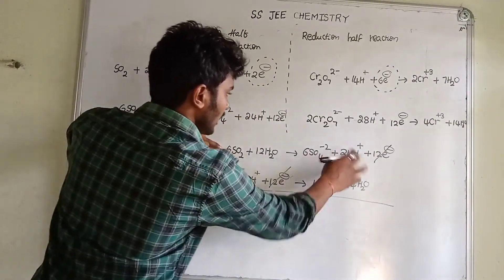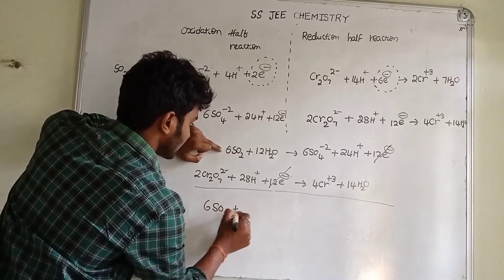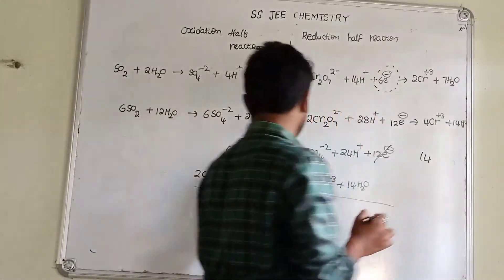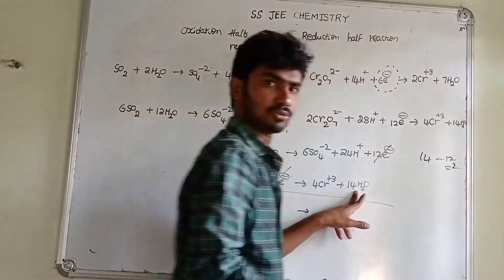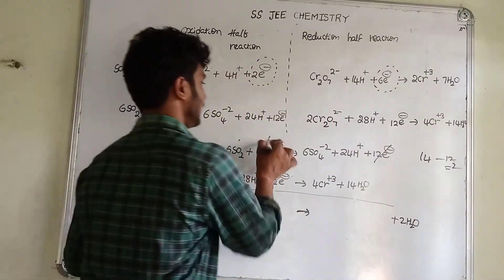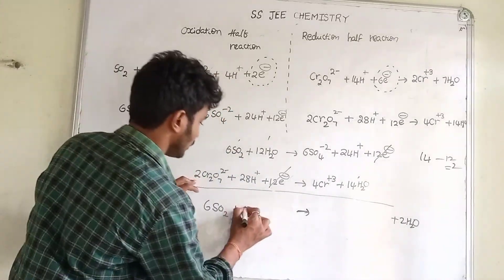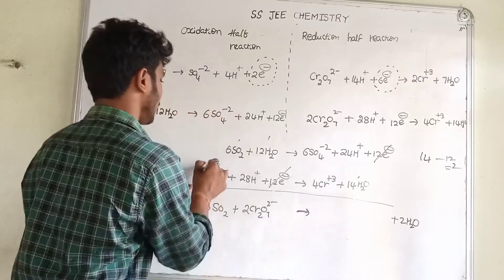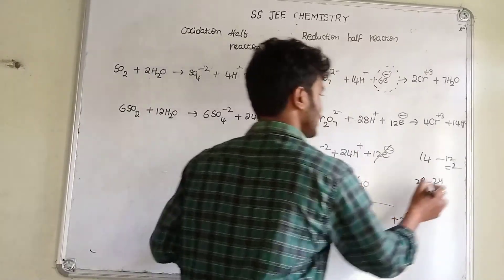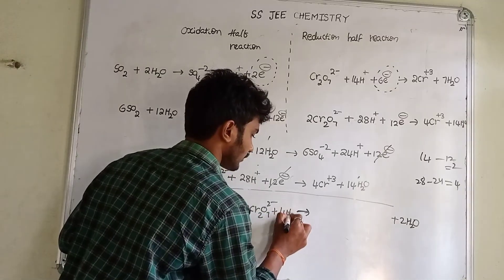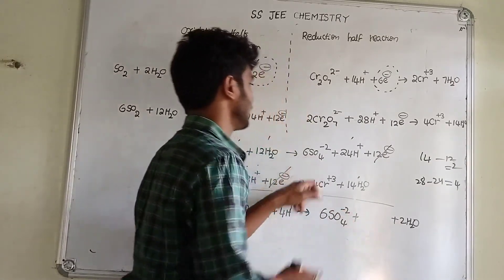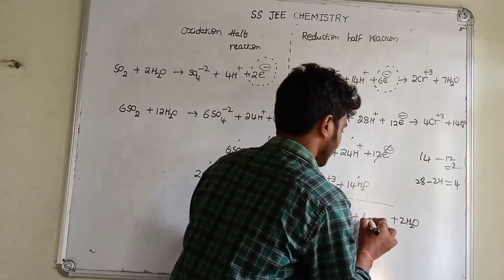Now we have 6SO2. We take 12H2O and 14H2O on each side — 14 minus 12 gives 2H2O net. And 28H⁺ minus 24H⁺ gives 4H⁺. So the final equation is: 2Cr2O7²⁻ + 6SO2 + 4H⁺ → 4Cr³⁺ + 6SO4²⁻ + 2H2O. This is our complete balanced equation.